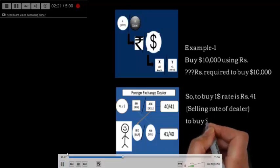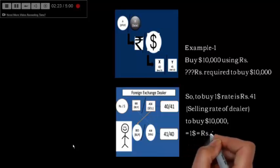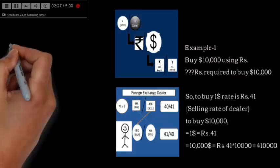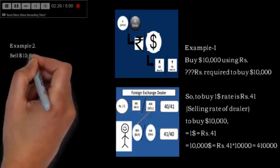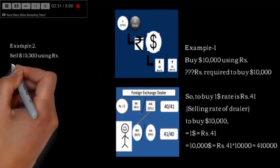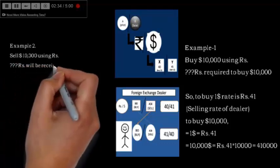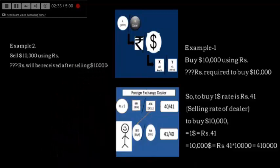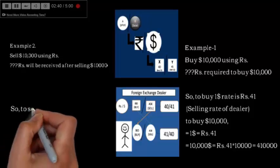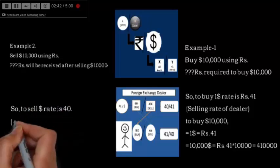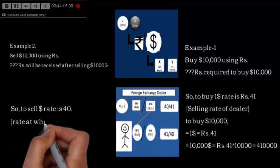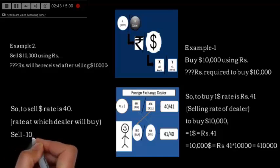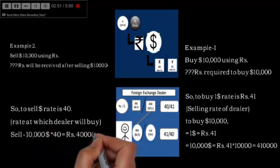Example 2: we have to sell dollar 10,000. The selling rate for dollar is 40. So for selling 10,000 dollars we will be receiving 10,000 into 40, that is 400,000 rupees. This was about the base currency, the rate of which is given, so we directly did the multiplication.